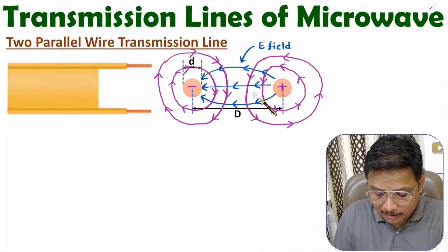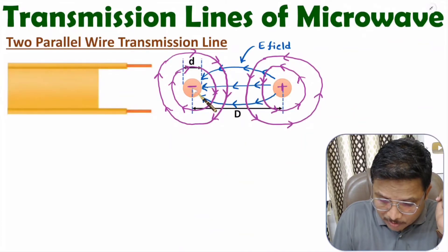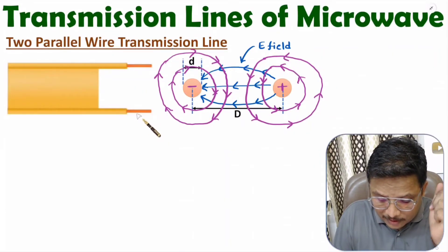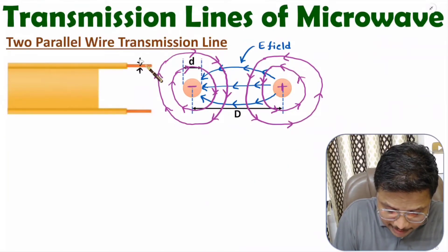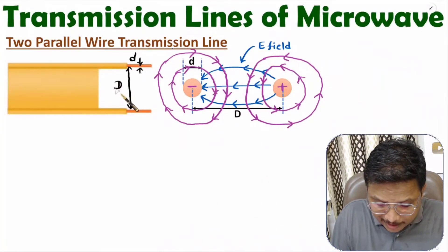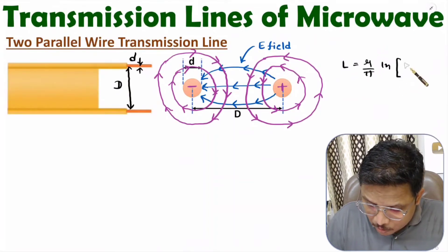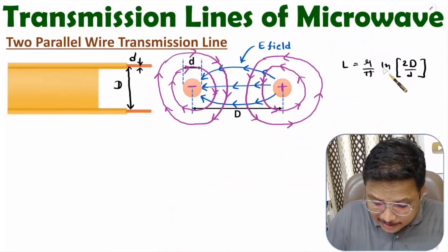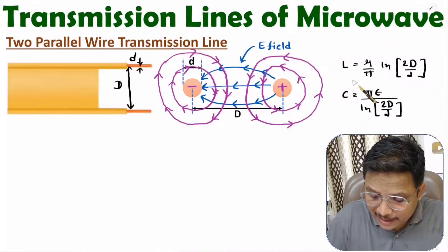That is how electric field and magnetic field are present with this two-conductor parallel wire transmission line. If you want to calculate inductance and capacitance based on dimensions — diameter small d and spacing capital D — then inductance L is μ/π · ln(2D/d), and capacitance is πε / ln(2D/d). That is how one can identify inductance and capacitance of this transmission line.